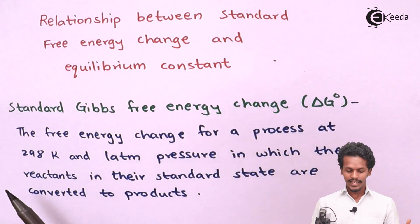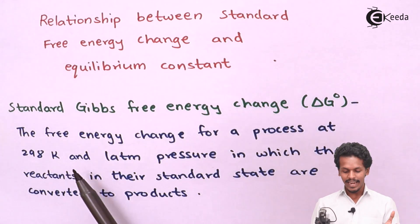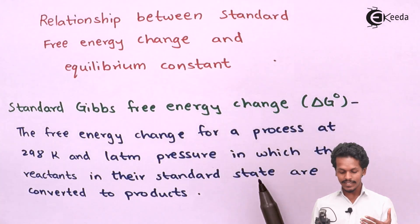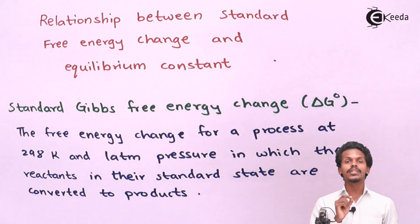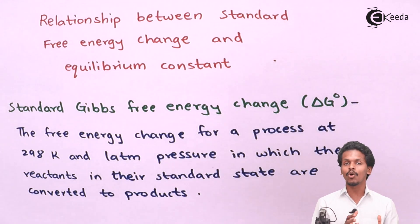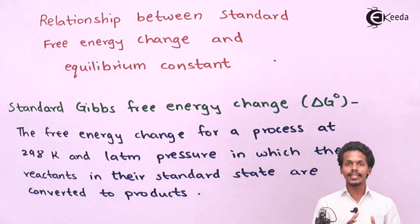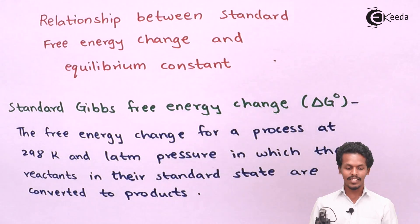ΔG° is the free energy change for a process at 298 Kelvin and 1 atmospheric pressure, in which the reactants in the standard state are converted into products also in the standard state. So 298 Kelvin and 1 atmospheric pressure are the conditions for the standard state of reactants as well as products. If we measure the change in Gibbs free energy under these conditions, that is the standard Gibbs free energy change, ΔG°.